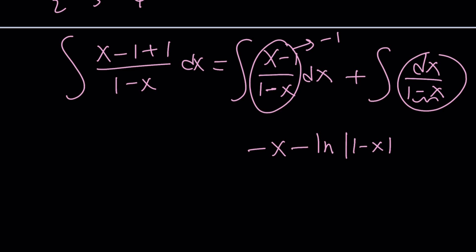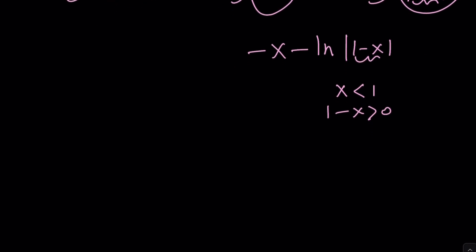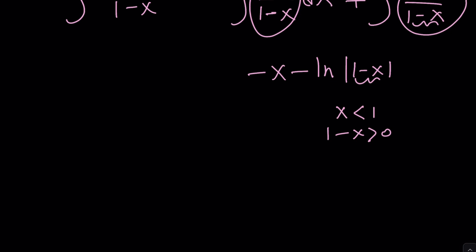So, it should look something like this. Great. But what about the absolute value? Well, if x is less than 1, then 1 minus x is positive. So, this is going to be positive and its ln absolute value is going to be the same. So, we can write it as negative x minus ln 1 minus x, maybe something like this.